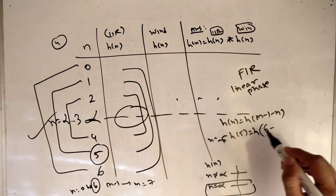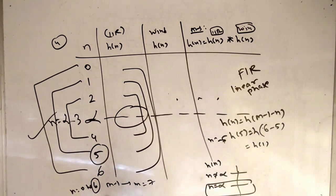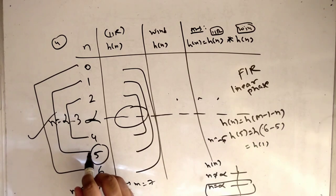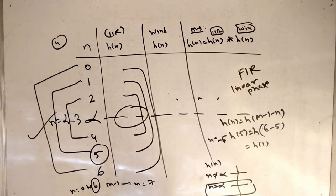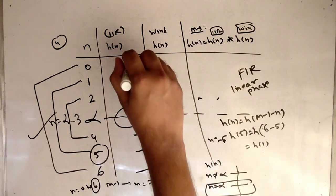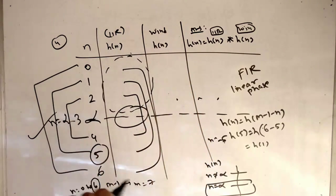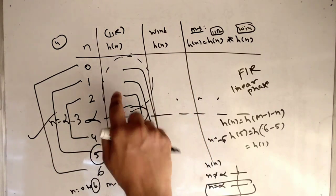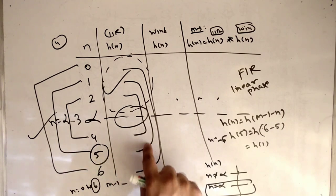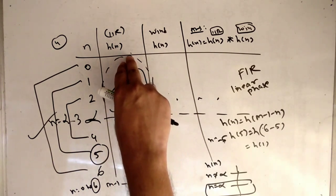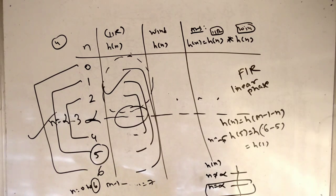For example, when N equals 5, H of 5 equals H of 1. This symmetry will save time — you only have to calculate one half of the values, and the other half is a copy from the symmetric counterpart.